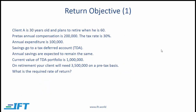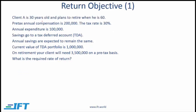Let's look at a sample question dealing with a multi-period scenario. Client A is 30 years old and plans to retire at 60. Pre-tax annual compensation is $200,000, tax rate is 30%, annual expenditure is $100,000. Savings go to a tax-deferred account. The current value of the tax-deferred account is $1 million. On retirement, the client will need $3.5 million on a pre-tax basis. What is the required rate of return?